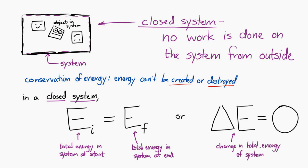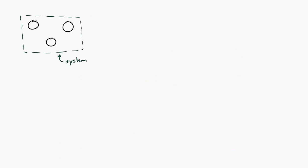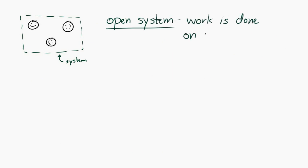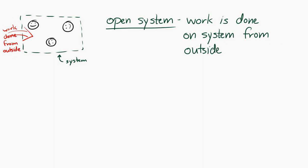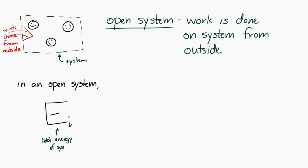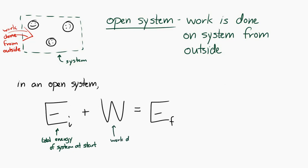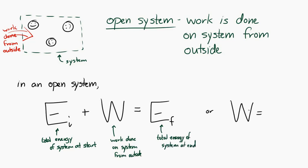Now let's say we have a different type of system where some kind of work is done — we would call that an open system. An open system is one where work is done on the system from outside. Because of conservation of energy, we can write: the energy of the system at the beginning plus the work done from the outside equals the total energy at the end. Rearranged: the work or energy transferred to the system equals the change in energy of the system.